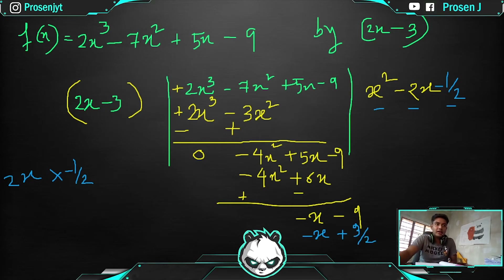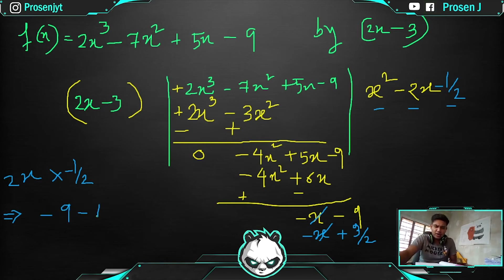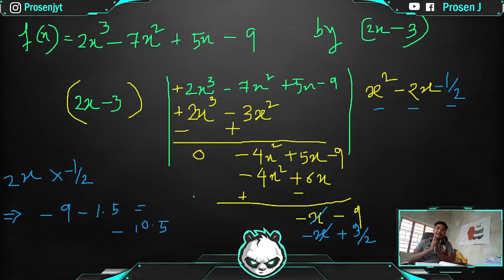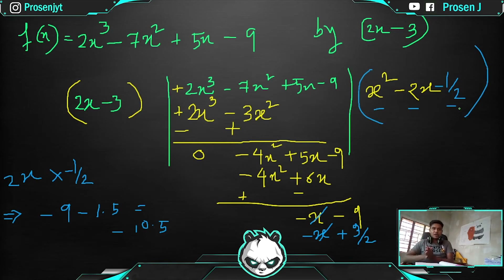Finally, after the subtraction: −x cancels, and we are left with −9 minus (−3/2), which gives approximately −10.5. So the remainder is −10.5. The quotient obtained is x² − 2x − 1/2. So from the division method we got two parts — the quotient and the remainder.